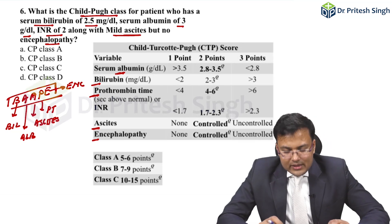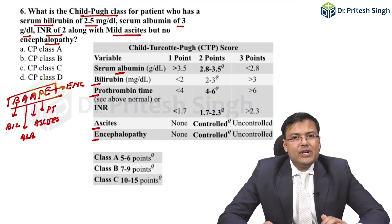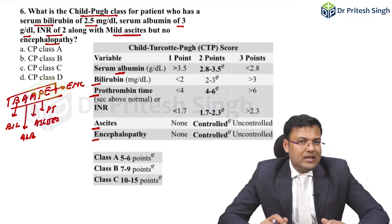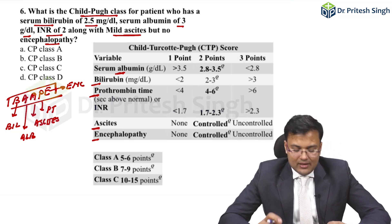This CTP score uses 1, 2, and 3 points per parameter, giving 3 classes: Class A, Class B, and Class C.